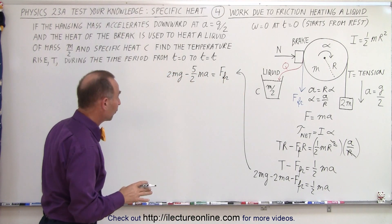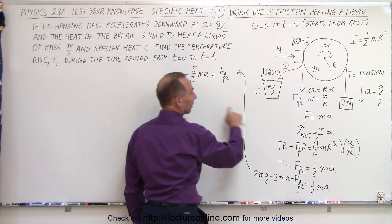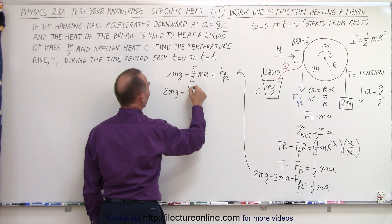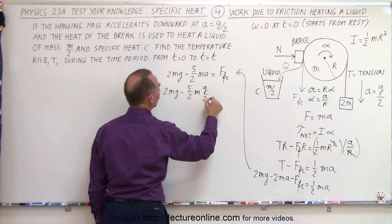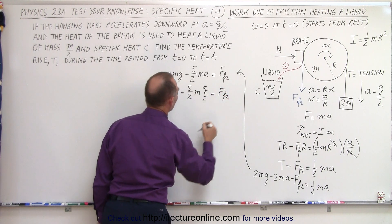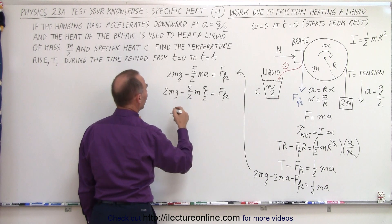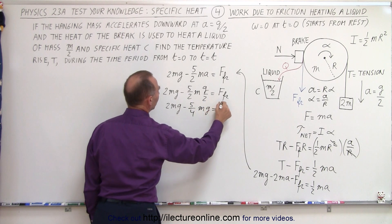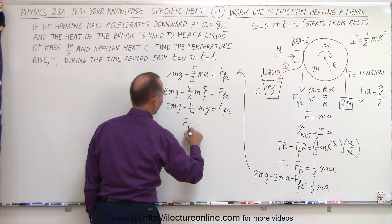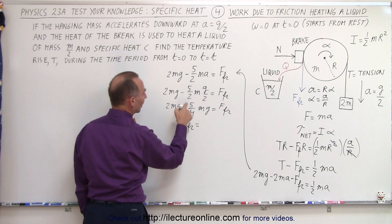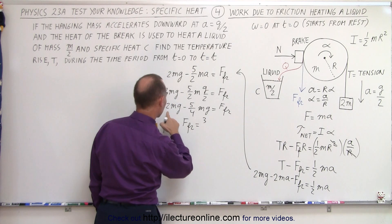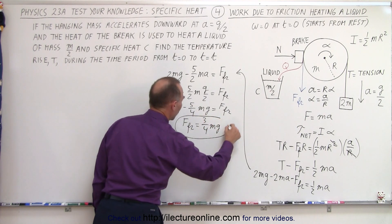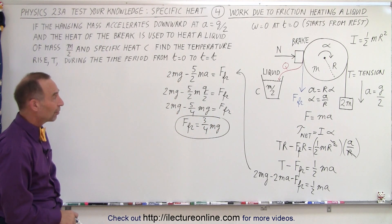We're almost there as far as finding the friction force. Now we're going to replace a by g over 2. That gives us 2mg minus 5 over 2 times m times g over 2, equal to the friction force. When we combine these two terms, 5 over 2 divided by 2 is 5 over 4. So 2mg minus 5 over 4 mg equals the friction force, which gives us 8 fourths minus 5 fourths, so the friction force equals 3 quarters mg.